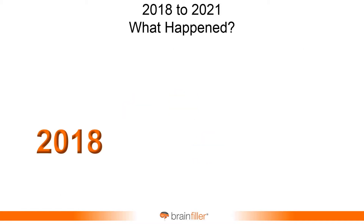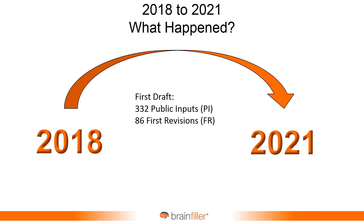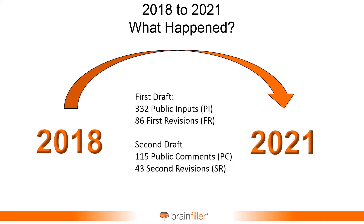A lot has happened since 2018. From 2018 to 2021, what has happened to NFPA 70E? To begin with, for the revision cycle, there were 332 public inputs made — you may think of these as proposals, which is what they used to be called. That led to 86 first revisions. Then on the second cycle, the second draft, there were 115 public comments made, which led to 43 second revisions.